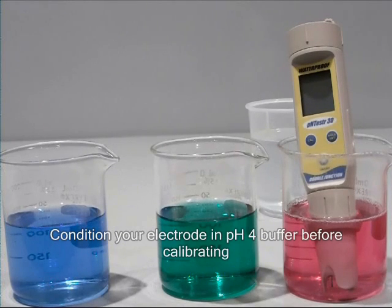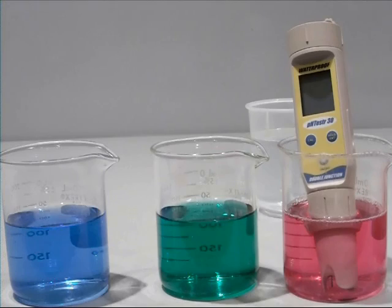Before you begin, condition your pH tester electrode by immersing it in electrode storage solution, pH 4 buffer, or tap water for at least 30 minutes before use. Do not use deionized water.